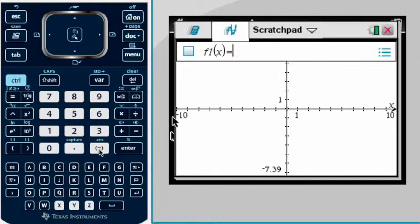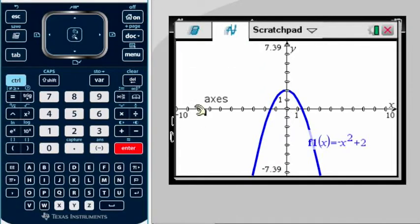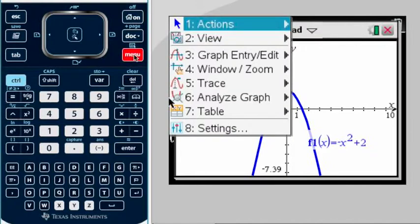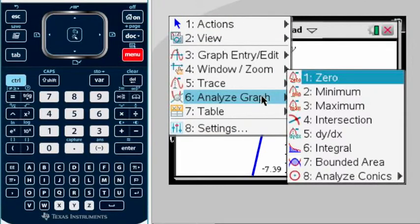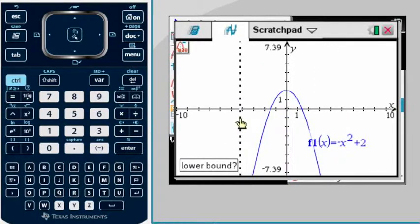I'm going to erase everything, scratchpad. I'm going to go to my graph. I'm going to use this very example, this time I'm going to go with negative x squared plus two. So here I can see that my problem has a maximum. So when I want to find my maximum, I'm going to start obviously again menu, Analyze Graph, but now instead of minimum I select the maximum.